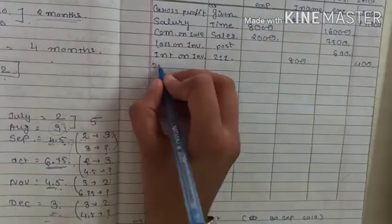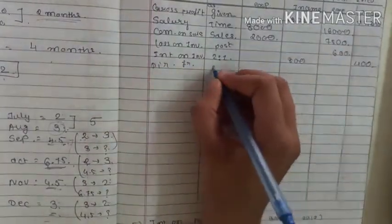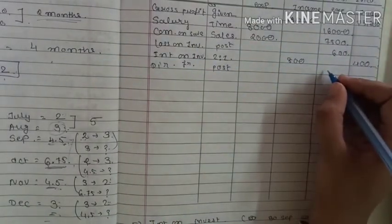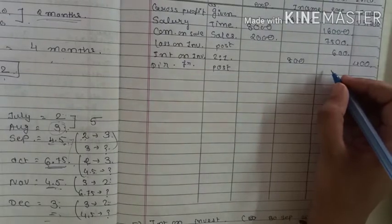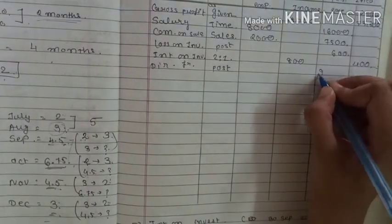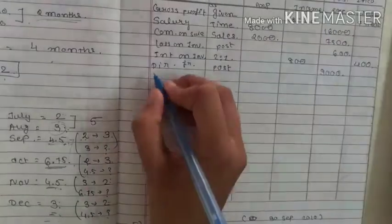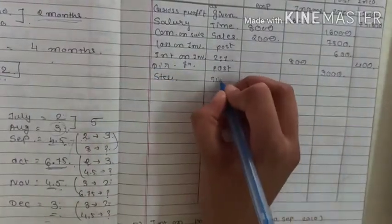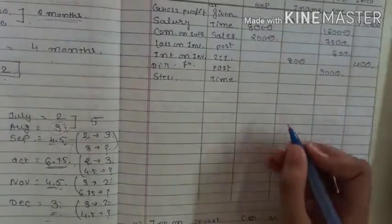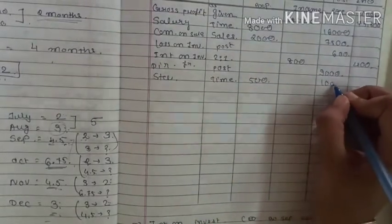Director's fee is obviously a post-incorporation expense — amount is 9,000 rupees, entirely in the post-incorporation period. Stationery and printing is distributed on a time basis (1:2), giving 500 for pre-incorporation and 1,000 for post-incorporation.